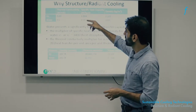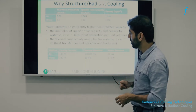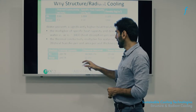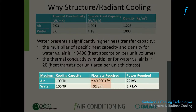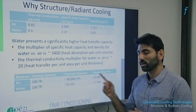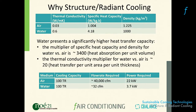The implications of switching the cooling medium from air to water are significant. To create 100 tons of cooling with an air-based system, you would need to pump approximately 40,000 cubic feet of air per minute. To create the same amount of cooling with water as the medium, you need only 32 cubic feet of water per minute. Pumping a compressible fluid like air versus an incompressible fluid like water results in a massive power reduction when choosing water.